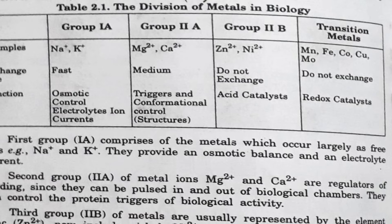Zinc, nickel, and iron ions assist acid-base catalysis and can cross-link proteins. The fourth group includes transition elements such as iron, copper, manganese, and molybdenum, which are firmly bound to fixed sites and act mainly by change of oxidation state due to their property of variable valency. There is also another group of metals that do not occur in vivo but can be introduced deliberately as poisons or for medicinal purposes, such as chromium, mercury, gold, platinum, and lithium.